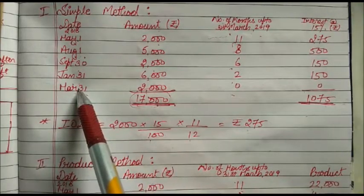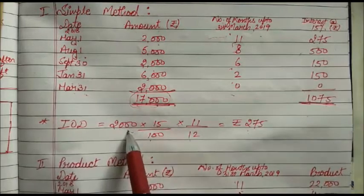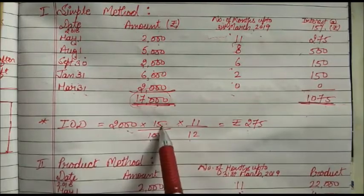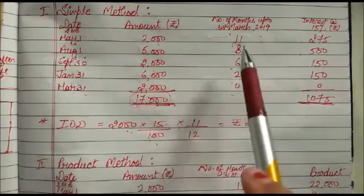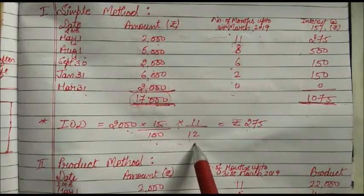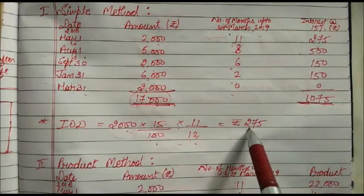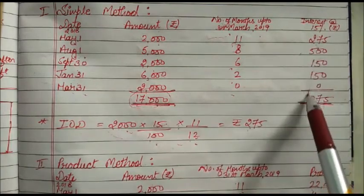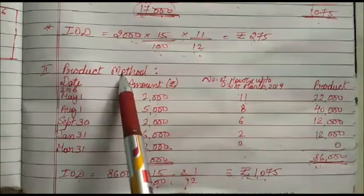Now we calculate interest on drawings using the formula: total drawings × rate ÷ 100 × time ÷ 12. For the first drawing of ₹2,000 at 15% for 11 months, we get ₹275. Likewise we calculate interest for each drawing separately using the simple method.